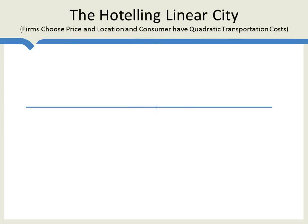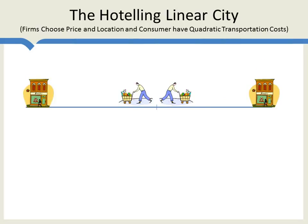So far we've only looked at the model where prices are fixed. More generally, we want to look at a model where firms choose both prices and locations. To do this properly, we need to specify the cost to consumers of traveling to their closest store. We assume consumers have quadratic transportation costs — the cost of walking to the nearest store increases the farther away the store is, and it increases at an increasing rate. It turns out that if you specify the model in this way, you get maximum differentiation: the firms split as far apart as possible.